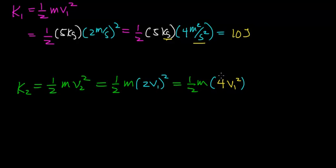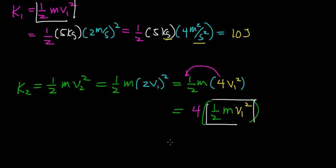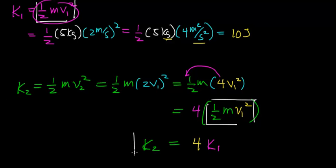The next thing I'm going to do is rearrange this equation — I'm going to pull the 4 out to the front. When I do that, I get 4 times one half the mass times V1 squared. That term is identical to K1 — the kinetic energy when the object is traveling at the lower velocity. So what I can now say is: when you double the velocity of an object, you quadruple the kinetic energy of that object.